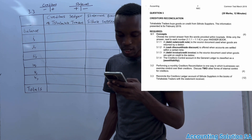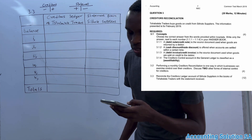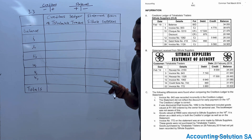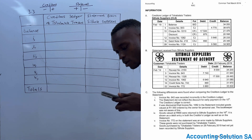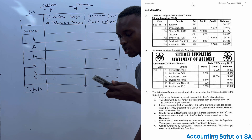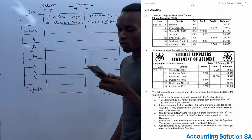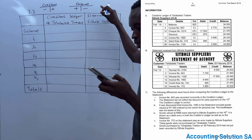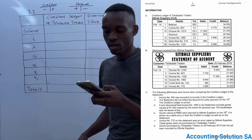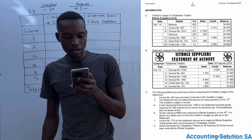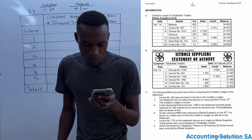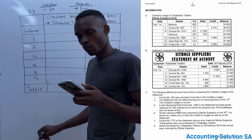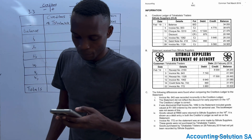Reconcile the creditors ledger account of Citola Supplier in the books of Chavalala Traders with the statement received. The creditors ledger of Chavalala Traders represents our books. They also give us the supplier's statement, and we need to identify the differences found when comparing the creditors ledger to the statement — these are the adjustments we are going to make.